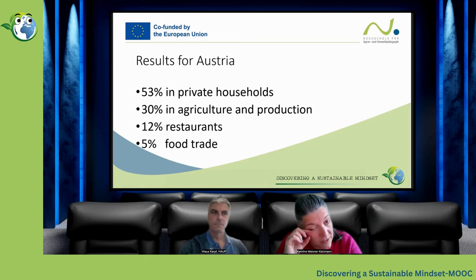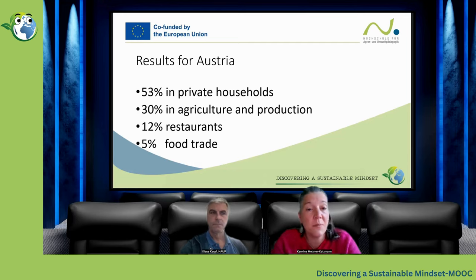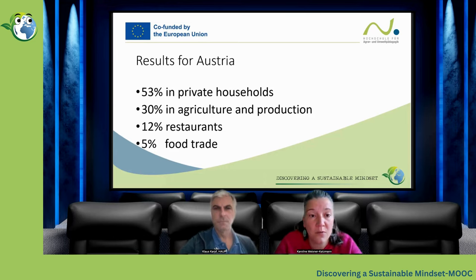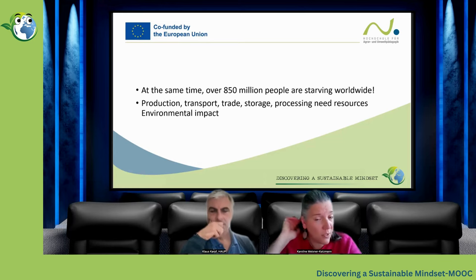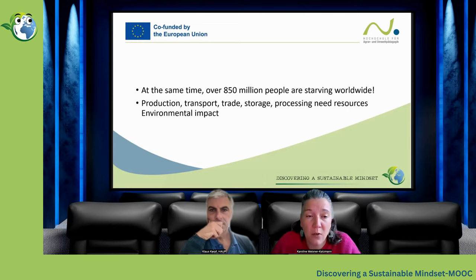For Austria, we had the results in detail that more than 50% of the thrown-away food waste is in private households, 30% stems from agriculture, 12% of the food waste is caused by restaurants, and 5% in food trade. And then on the contrary, at the same time, we have the paradox that over 850 million are starving worldwide. So we have far too much here, and there the people are starving in the global south. You can access this topic by production, transport, trade, etc., because all of that has an environmental impact.